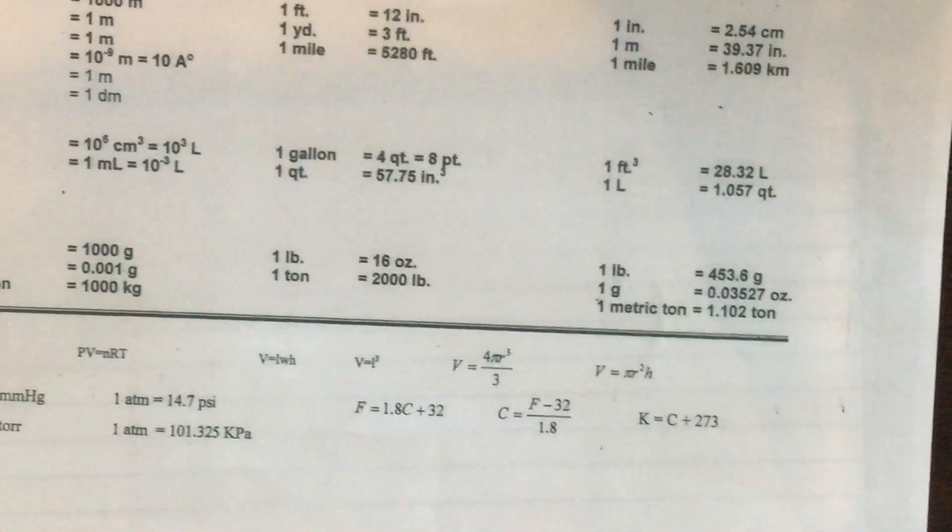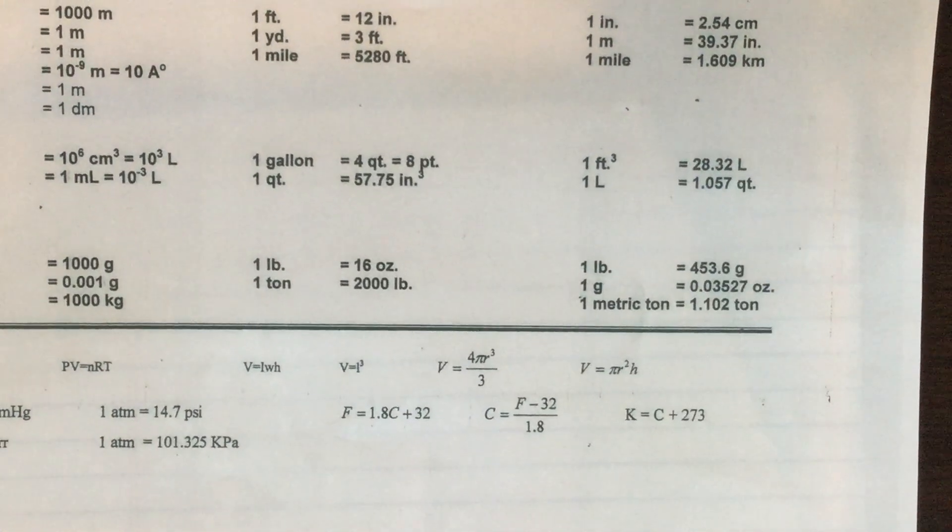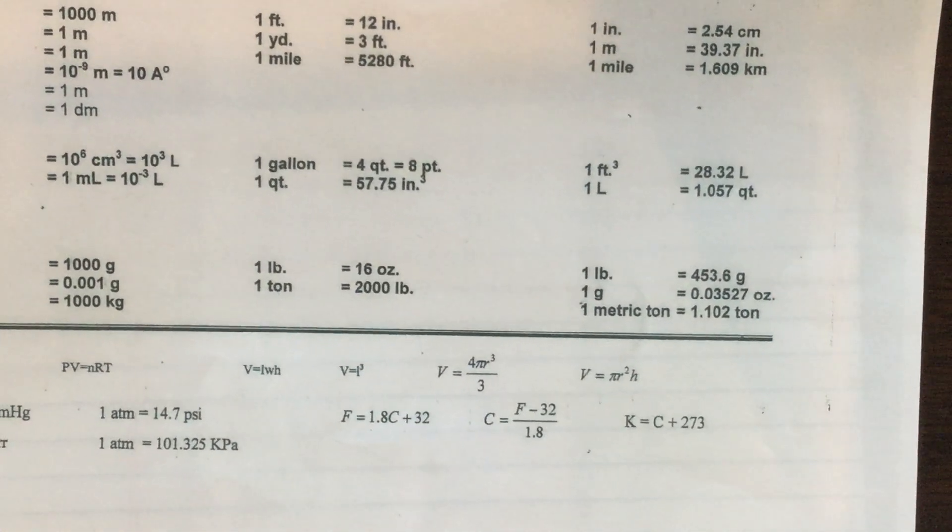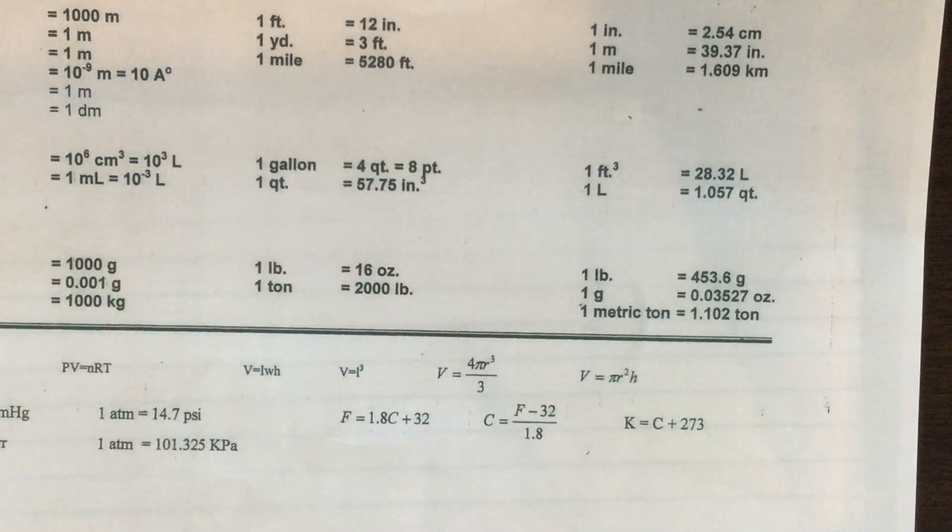In this example we want to convert 1.026 gallons to milliliters. This is a volume conversion. In our conversion table, you'll notice there is no gallon to milliliter conversion.